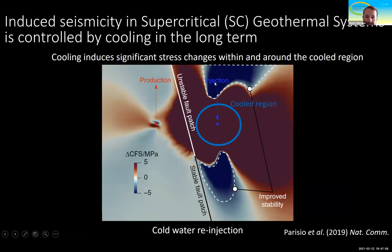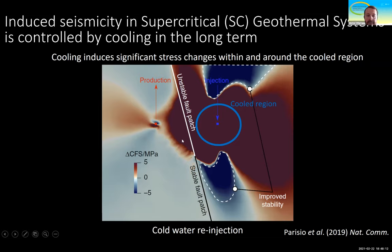We are injecting in this well, and after 25 years of injection we have this cooled region. In the background you can see the changes in the Coulomb failure stress — positive values mean conditions are more unstable.